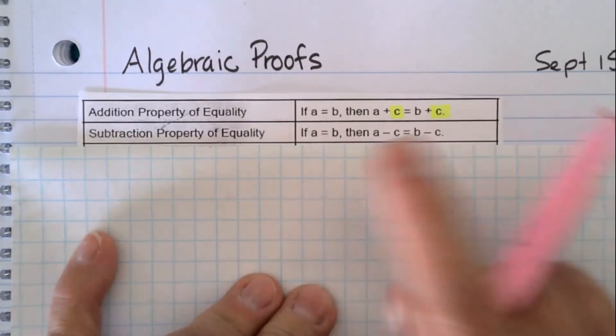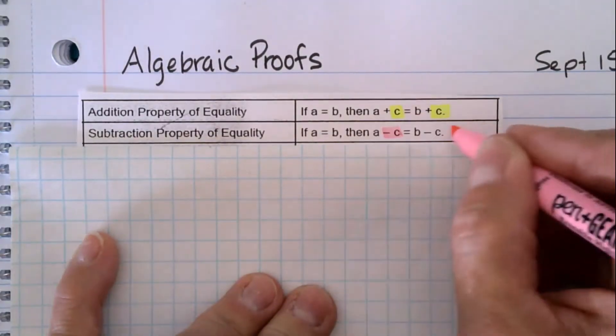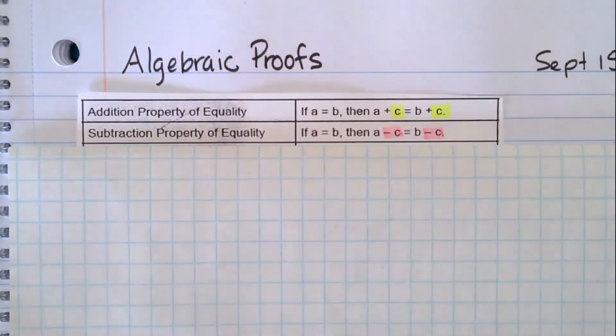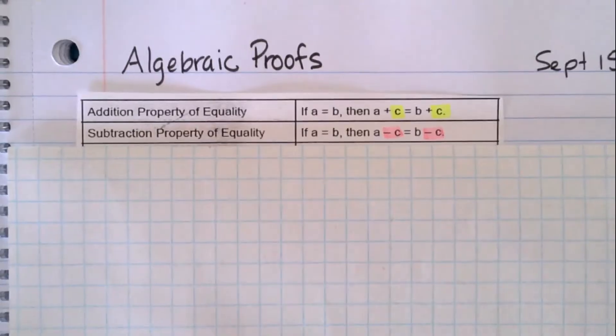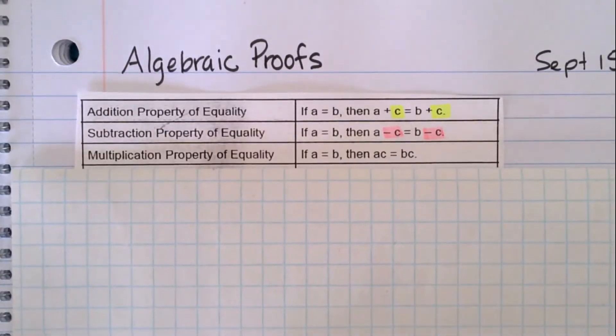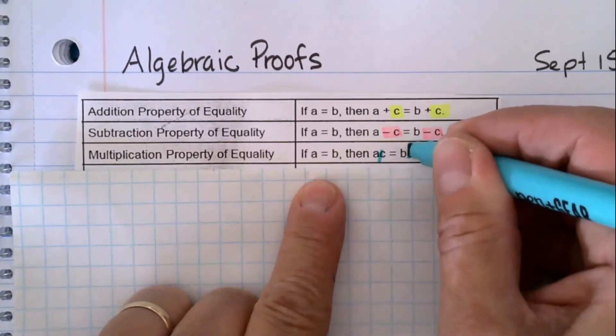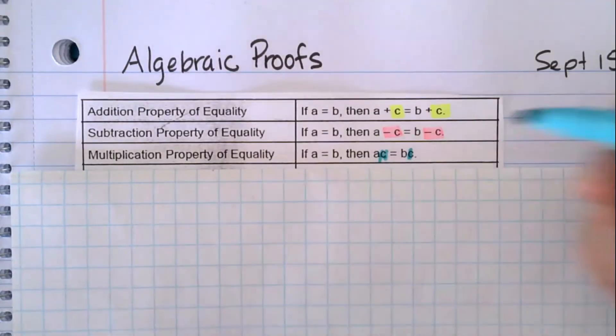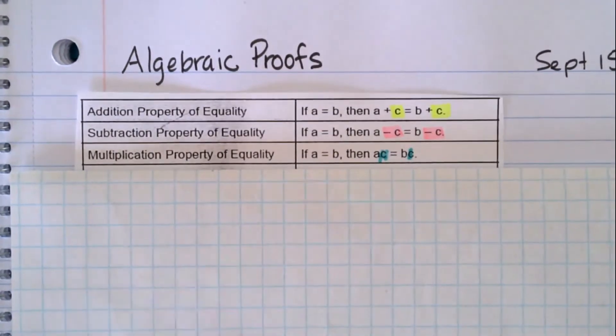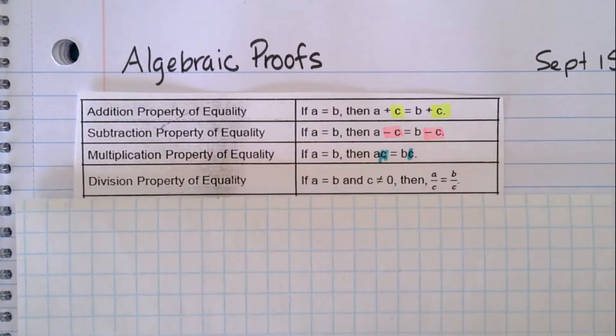Subtraction property of equality is that if two things are equal and you subtract the same thing from both sides, those two things are also going to be equal. Multiplication property of equality: if you have two things that are equal and then you multiply both of them by the same number, you're going to get something that's still equal.